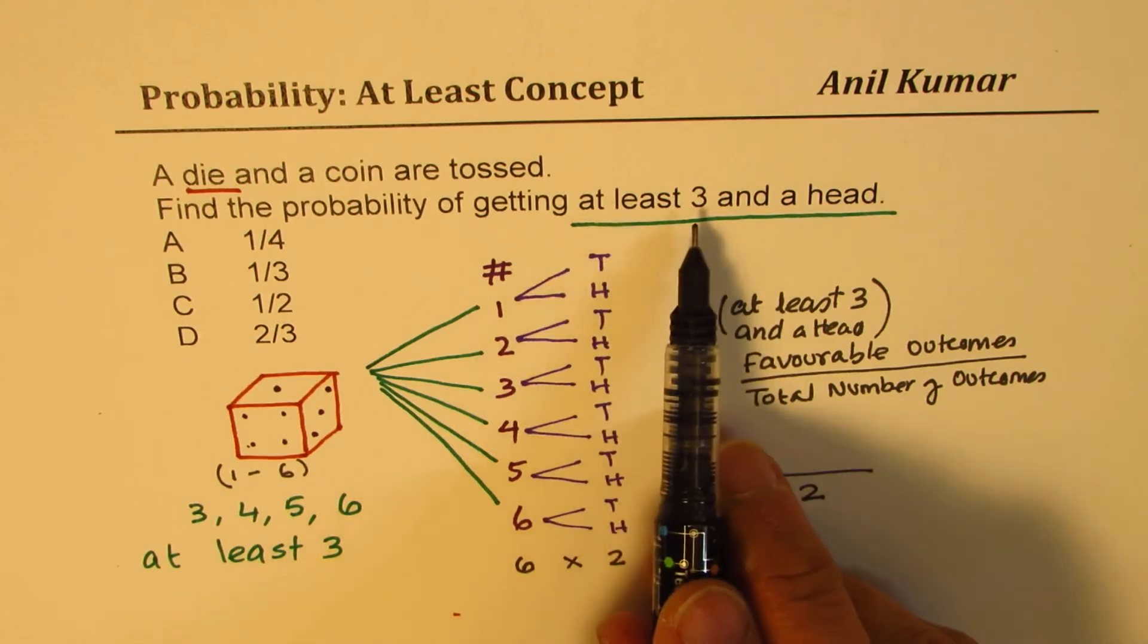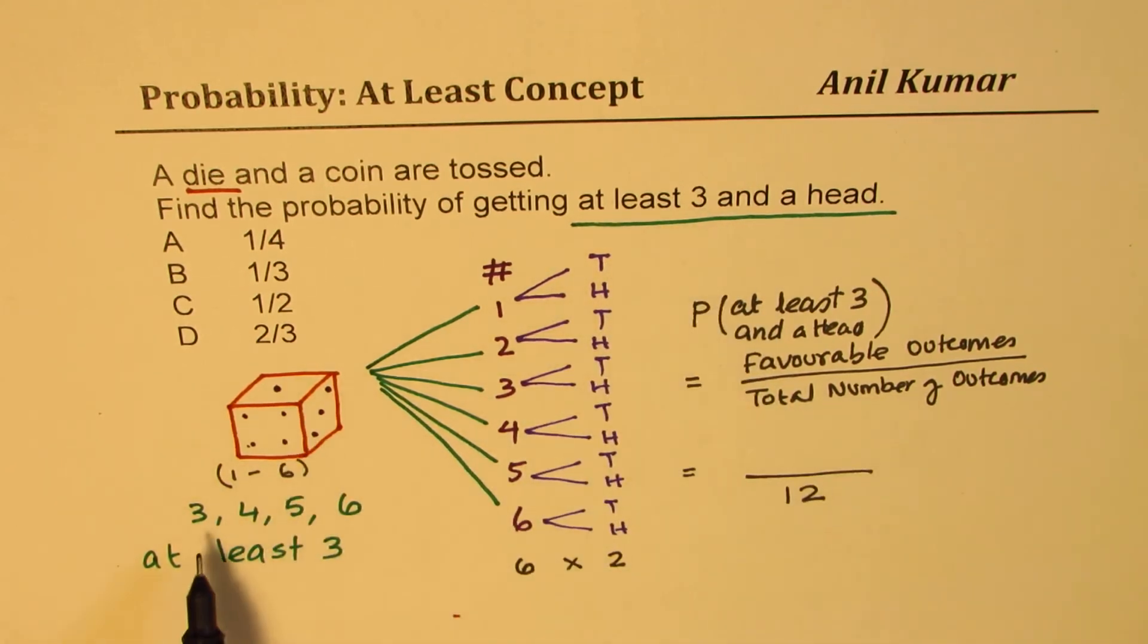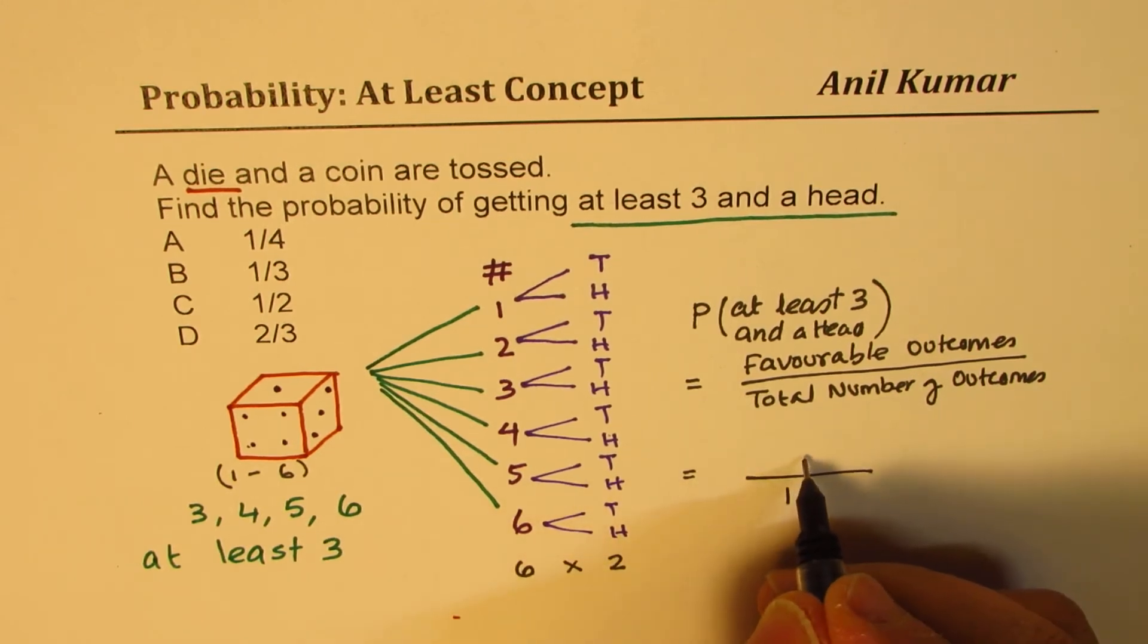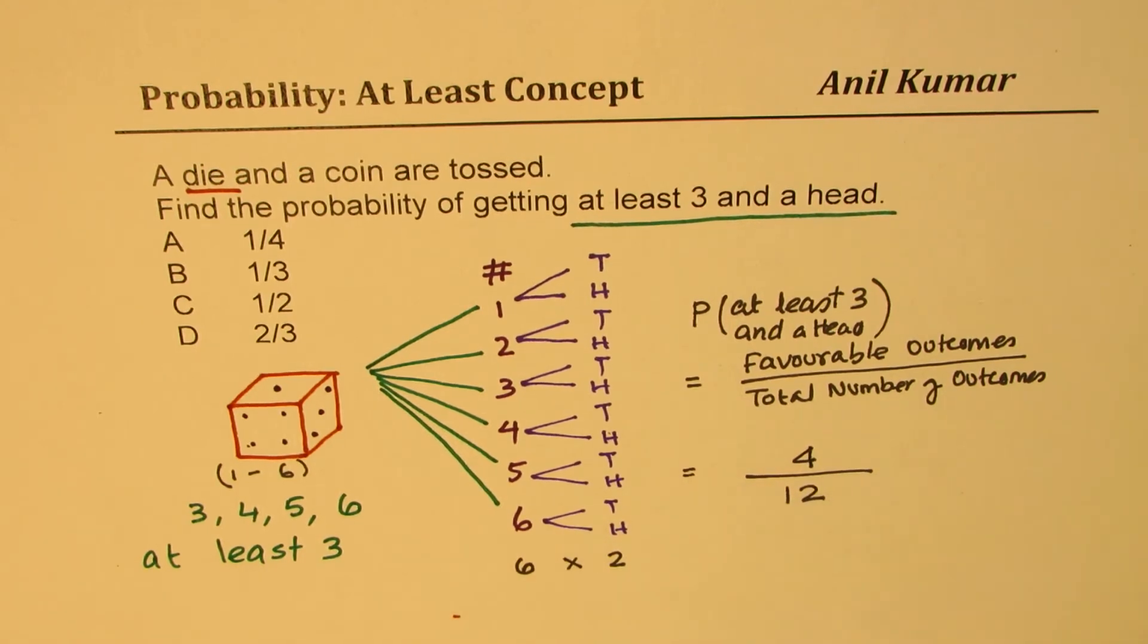We are looking for at least three - that means for the dice the number should be three, four, five or six. That means these are four. And for each four we have only one possibility of getting head, so we get four times one which is four on the top. When you make a tree diagram, it helps you to visualize.